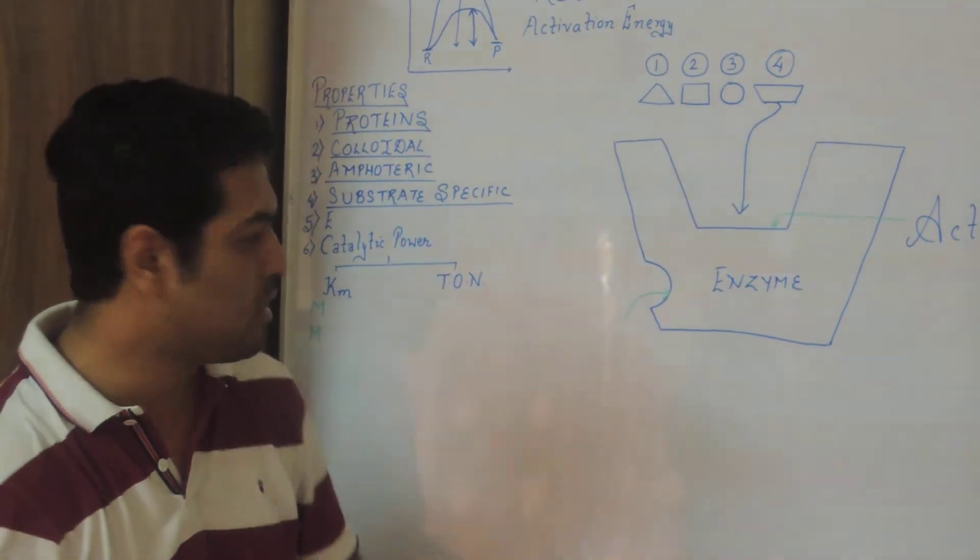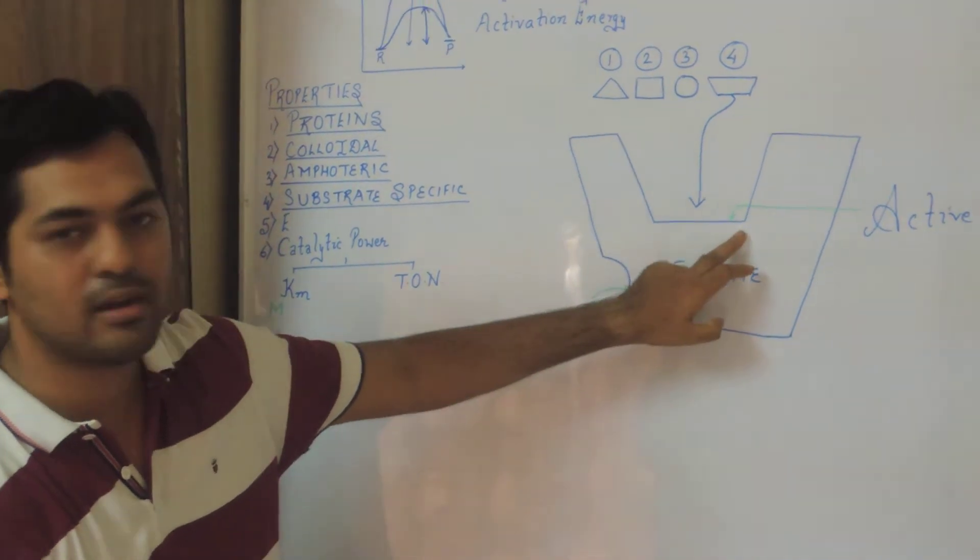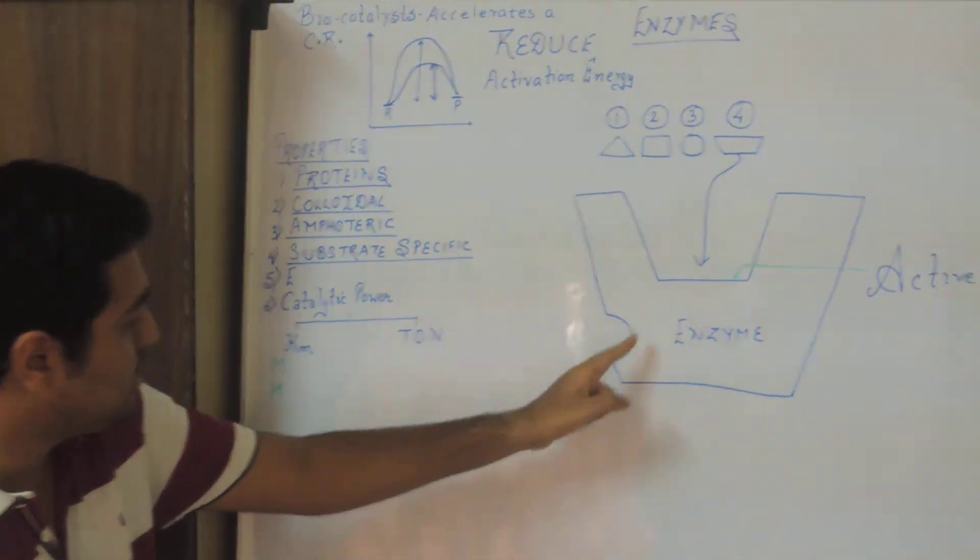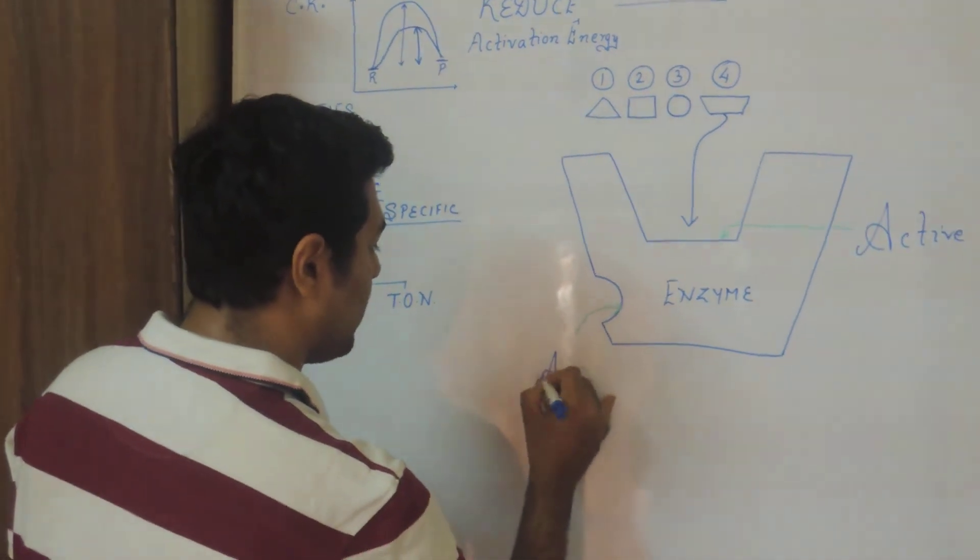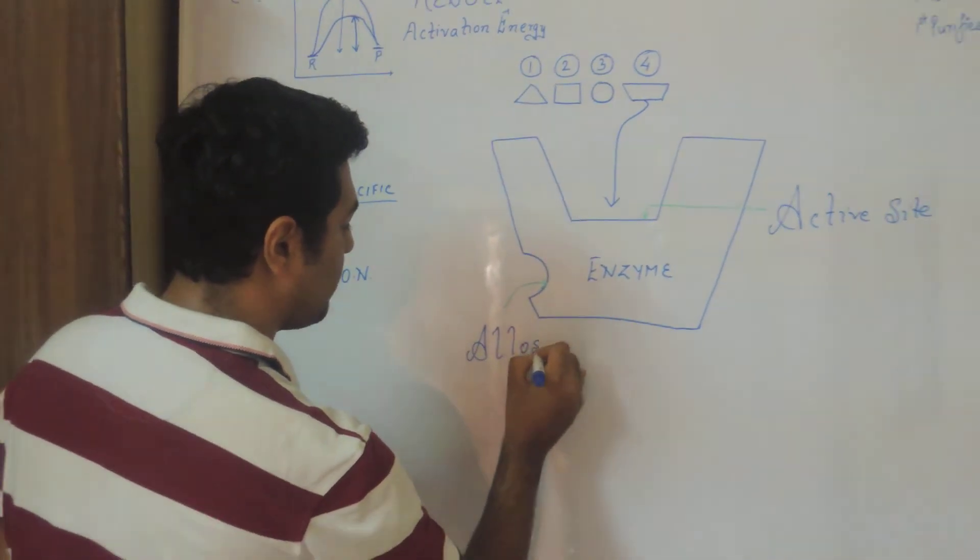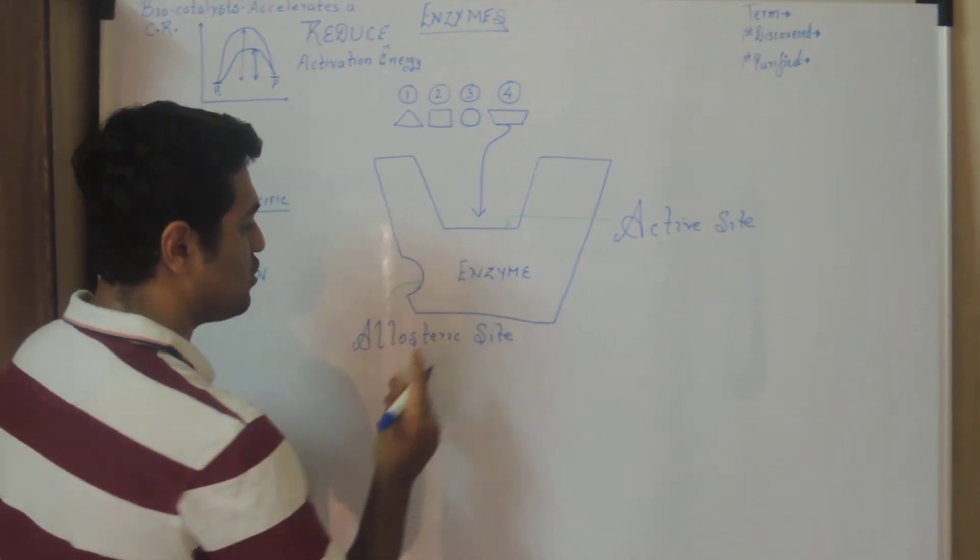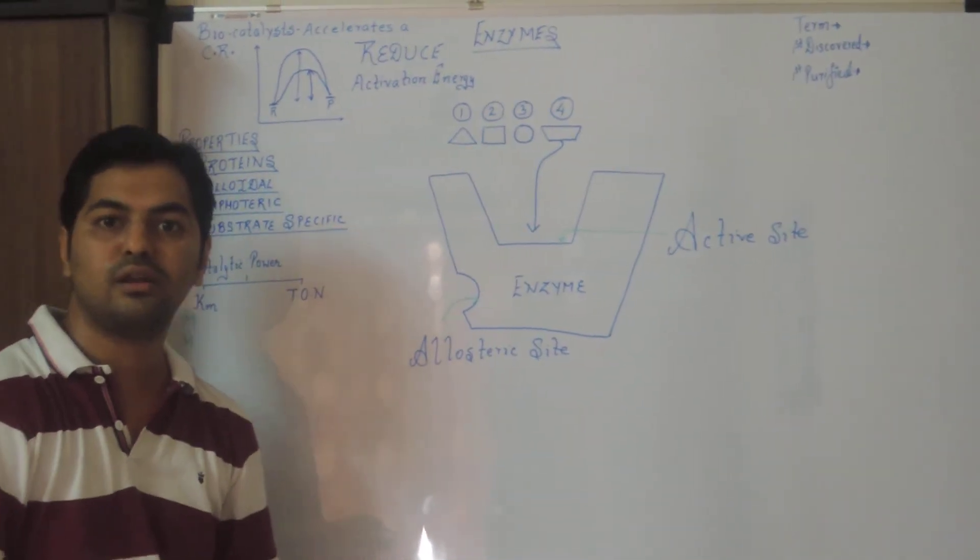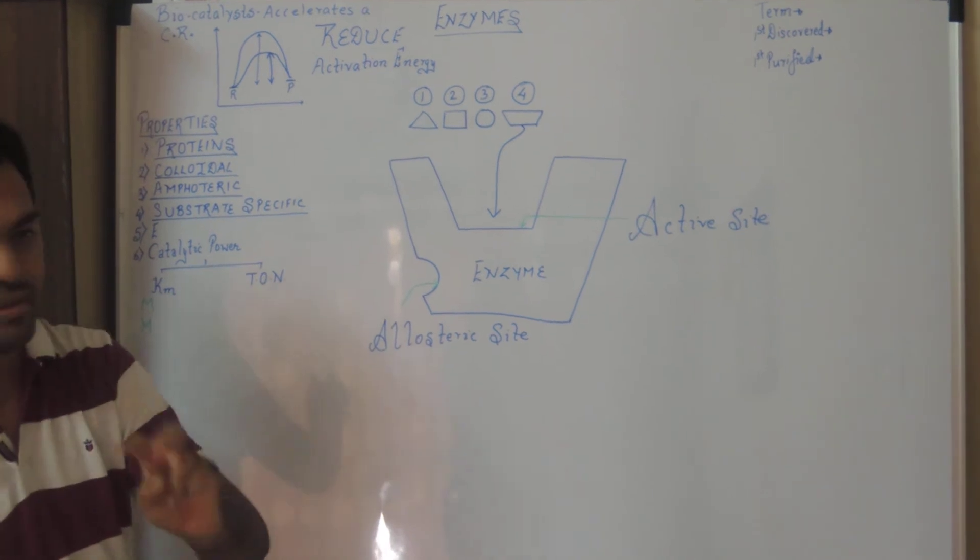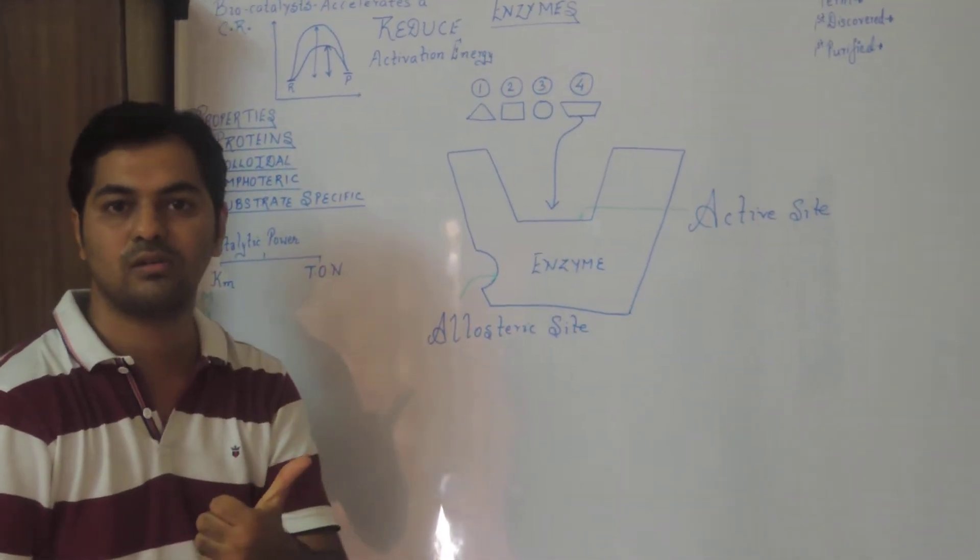One more important point to remember. Apart from enzyme having an active site, enzyme also has an additional site. This site we call as allosteric site. What is the importance of allosteric site? We will describe in our next video. But basically you have to remember there are two sites in an enzyme. One is active, other is allosteric.